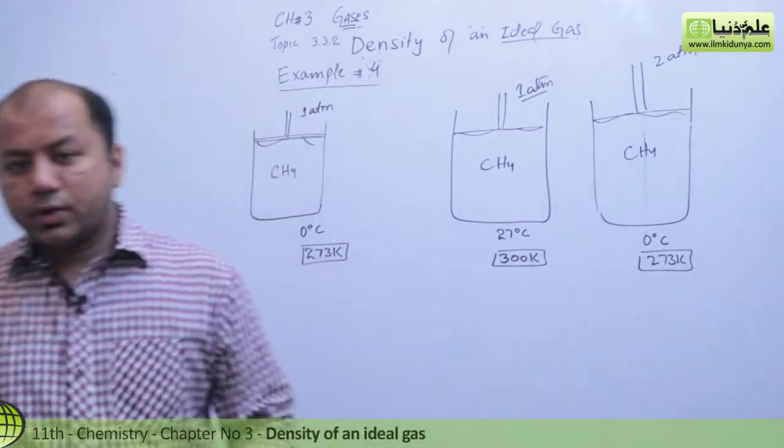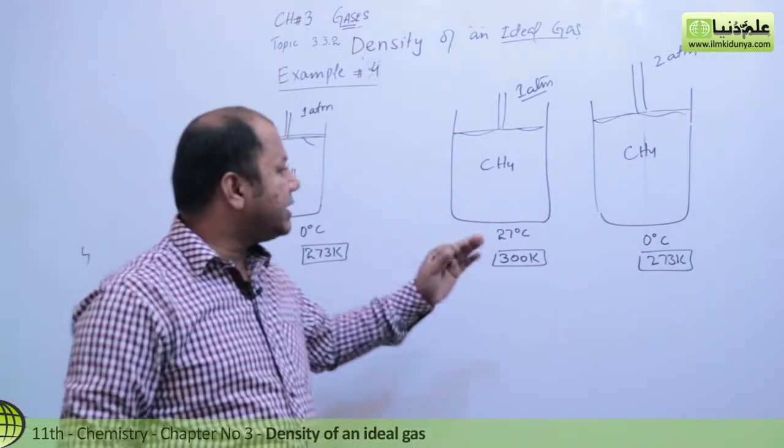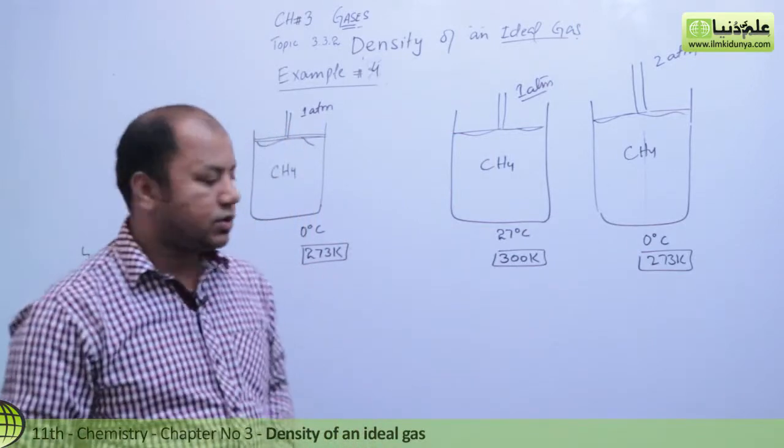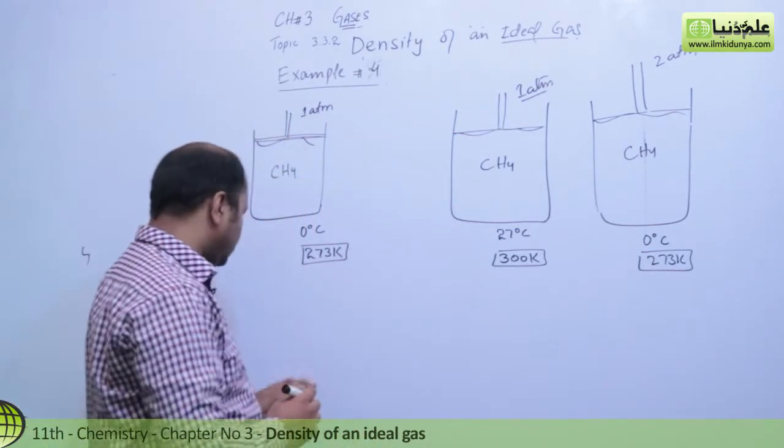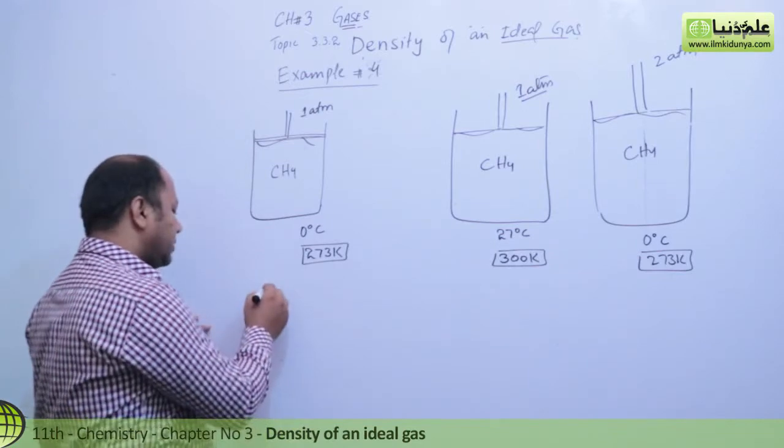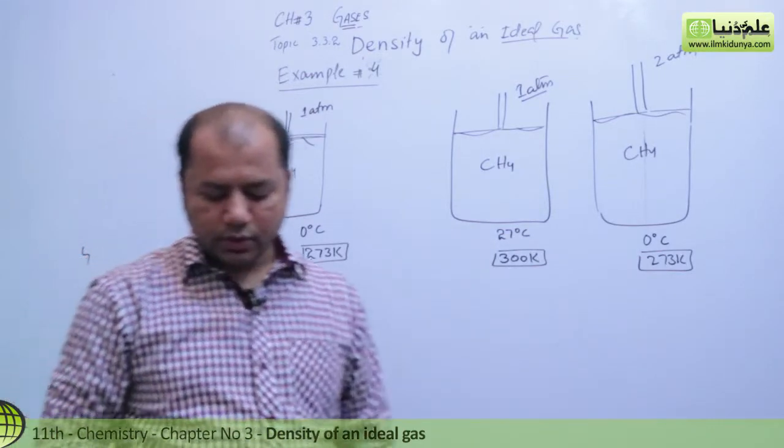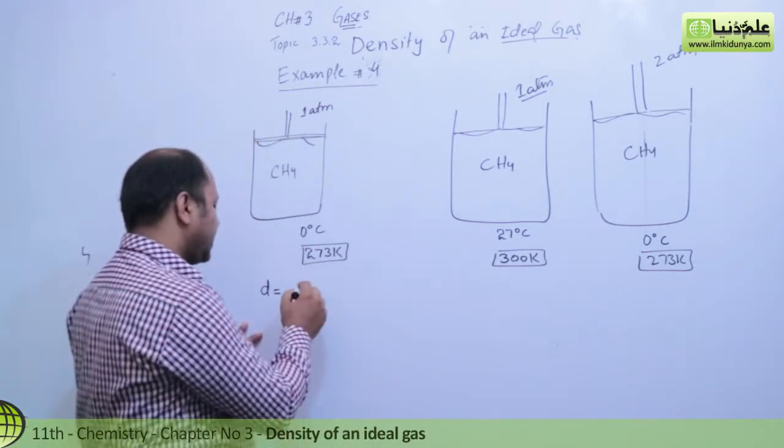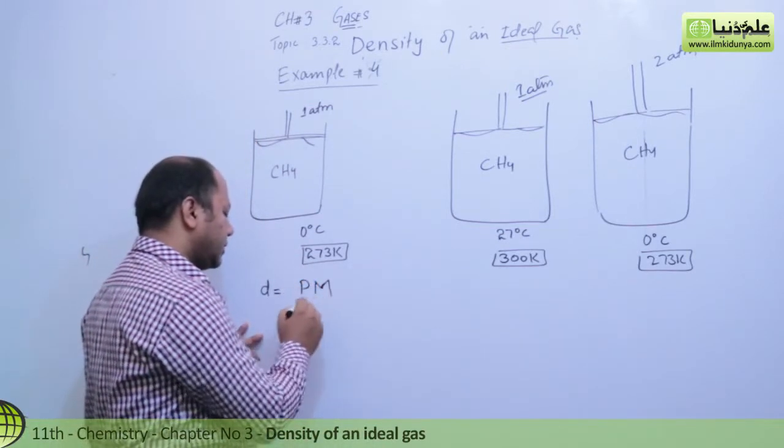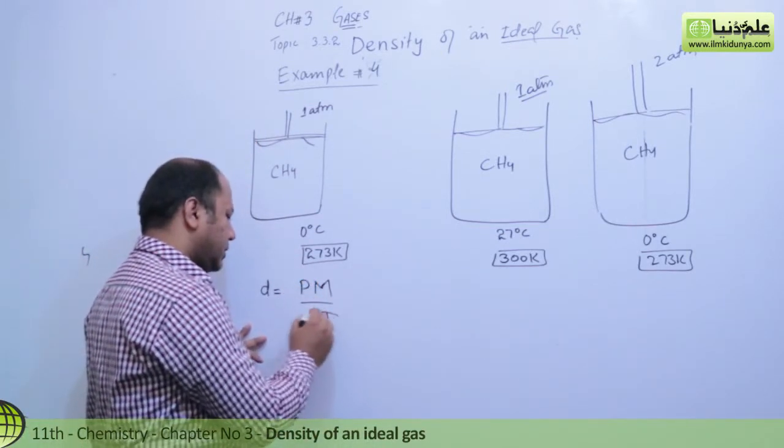We have three cylinders and we have the conditions. What is the formula for density? Density equals, you know it well, the pressure P into M.